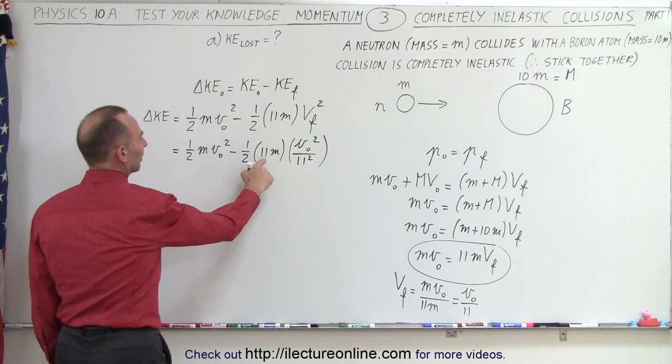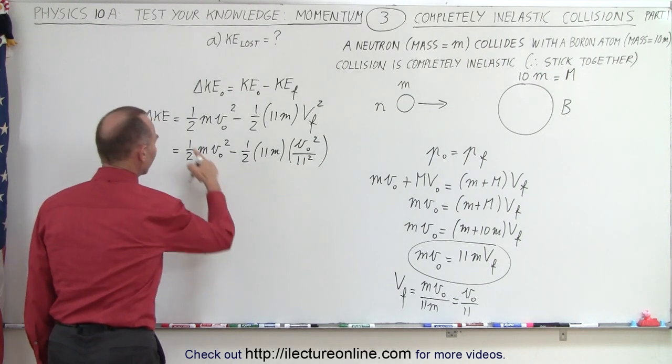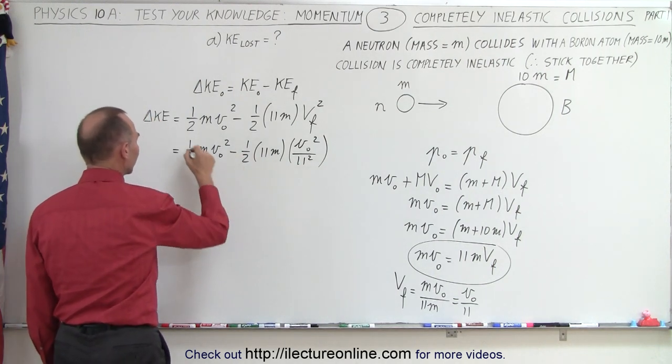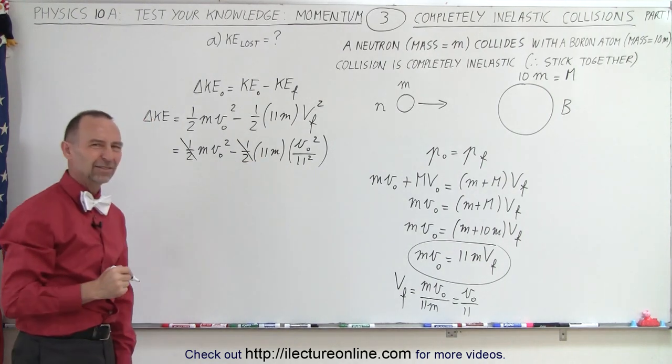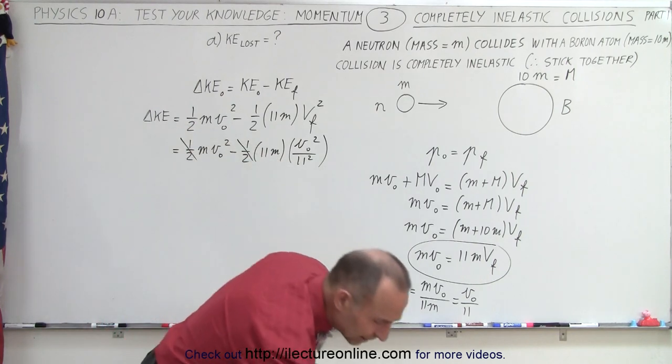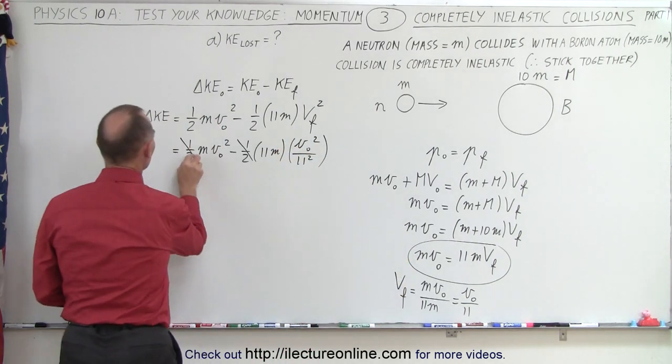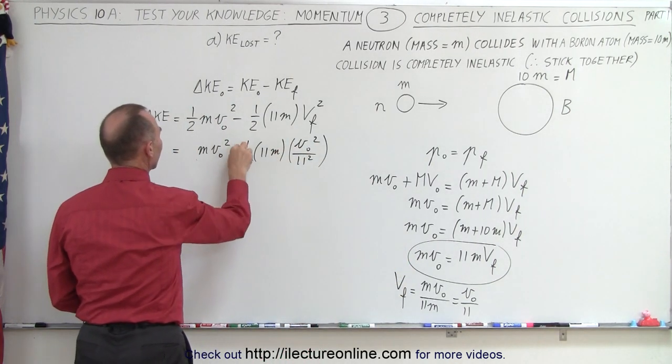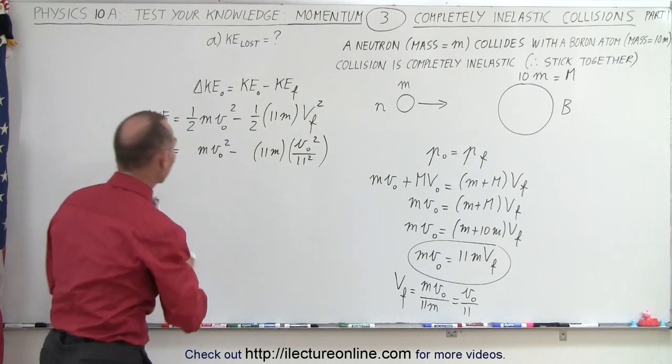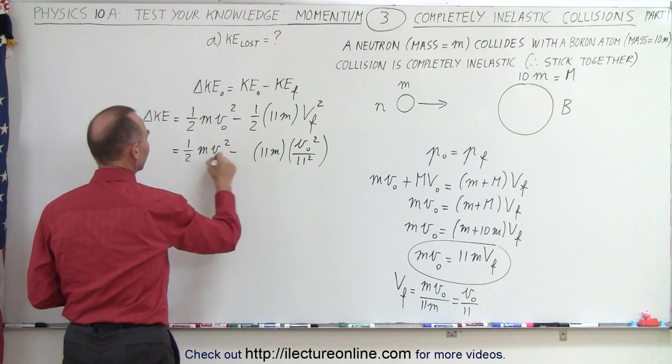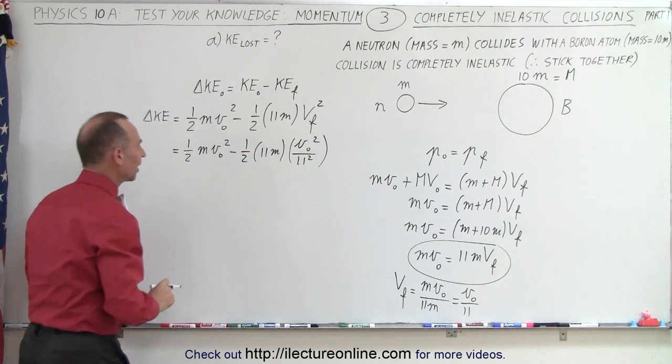And then notice that this 11 and one of those cancels out, the 1 halves cancel out, the m's cancel out, so I can cancel out the 1 halves. Well, actually, I guess I can't, because I'm not equating it yet to something on the left side. So I'll go ahead and keep the 1 halves for now. I was trying to simplify things the way we normally do, but we can't do that here. So let's go ahead and continue, not canceling anything out.